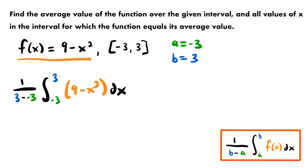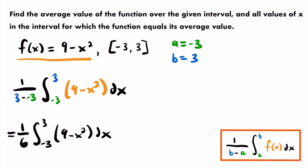First, simplify the coefficient: 1 divided by (3 minus negative 3). Subtracting a negative is the same as adding the positive, so this is 1 divided by (3 plus 3), giving us one-sixth times the integral from negative 3 to 3 of (9 minus x squared) dx.